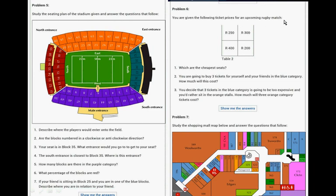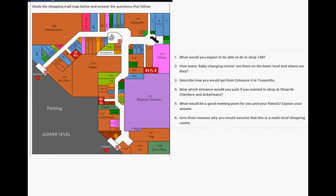Problem 6: You are given the following ticket prices for the upcoming rugby match. Which are the cheapest seats? Where are you going to buy three tickets for yourself and your friend in the blue category? How much will it cost? You decide that three tickets in the blue category is too expensive and you'd rather sit in the orange stalls. How much will three orange category tickets cost? I have no idea. I think this is the stadium. Let's look at the answers and then we'll look at the question again.